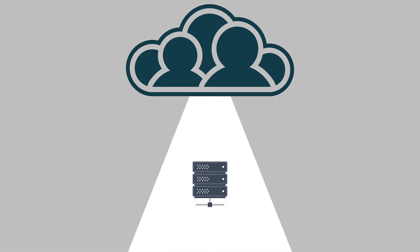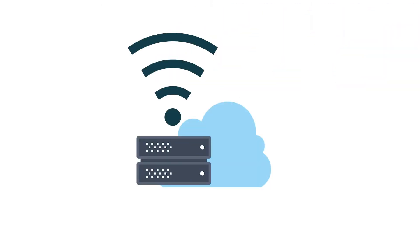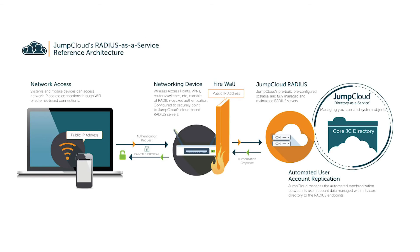Fortunately, that is no longer the case now that the JumpCloud Directories-as-a-Service platform has come to market. JumpCloud Directories-as-a-Service elevates RADIUS to the next level by moving network access management to the cloud. The key advantage is that IT admins can now leverage core user identities to manage network access remotely without anything on-prem. IT admins simply point their wireless access points at the JumpCloud Managed RADIUS server and provision access accordingly.